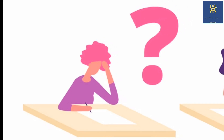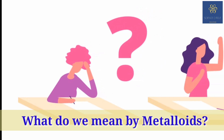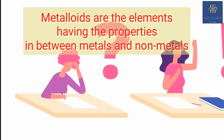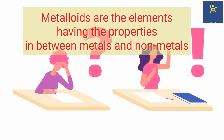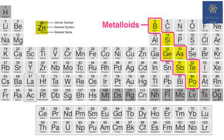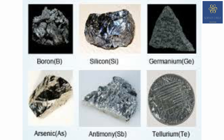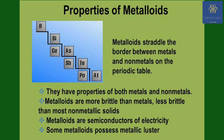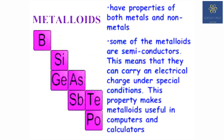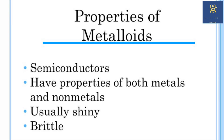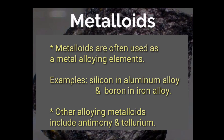Before closing, let us discuss metalloids. Metalloids are chemical elements whose physical and chemical properties fall between the metal and non-metal categories. Common examples include arsenic, germanium, antimony, silicon, boron, polonium, and tellurium. Metalloids typically have a metallic appearance but are usually brittle and only mediocre conductors of electricity, so they are also called semiconductors. Chemically they behave as non-metals. They are shiny solids at ambient temperatures and have the ability to form metallic alloys.